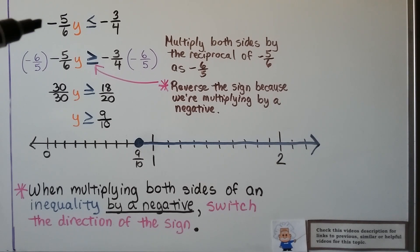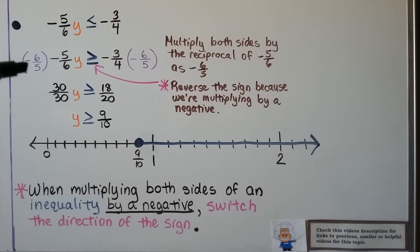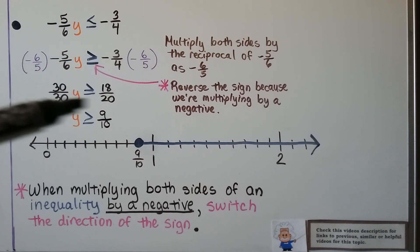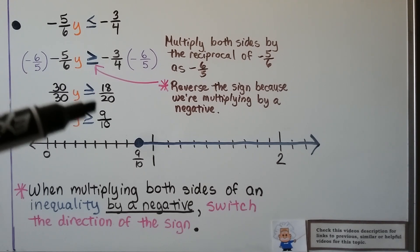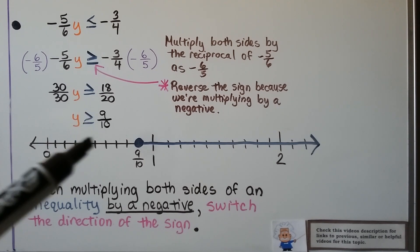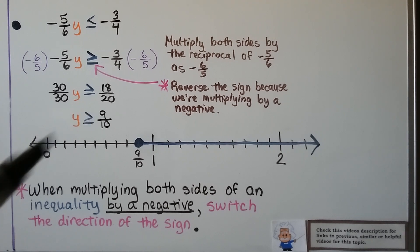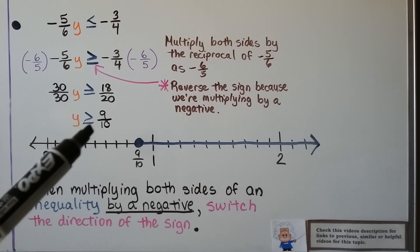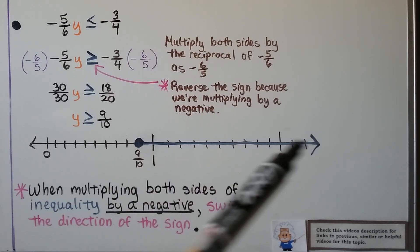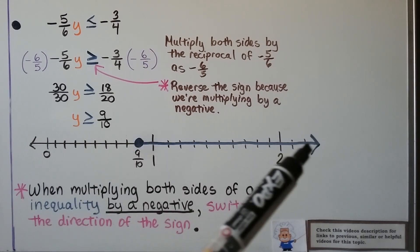Here we've got negative 5/6 y is less than or equal to negative 3/4. We multiply both sides by the reciprocal of negative 5/6, which is negative 6/5. Negative times a negative gives positive 30/30 y, and we reverse the sign because we're multiplying by a negative — so now it's greater than or equal to. We get positive 18/20, which simplifies to 9/10. So y is greater than or equal to 9/10. Because it's 'or equal to,' it could be 9/10, so we have a filled-in dot and show all values greater than 9/10 on the number line.